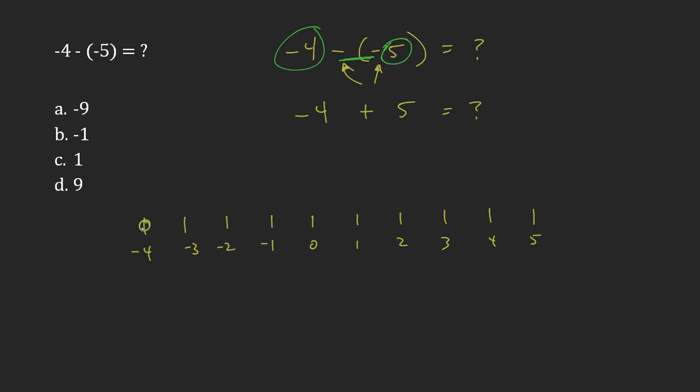If I'm at negative 4, and I add 5, that means I'm going 1, 2, 3, 4, 5.